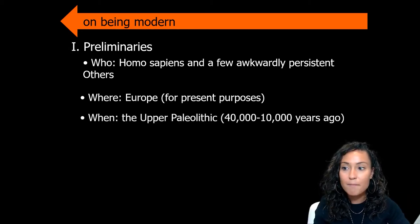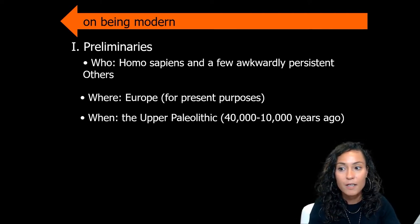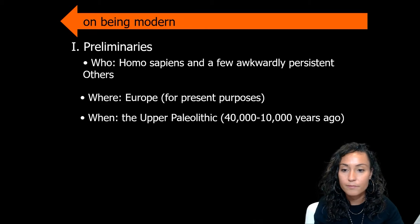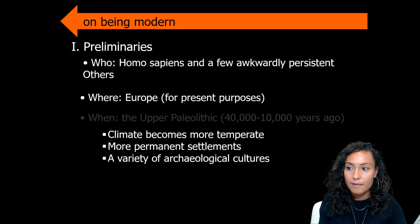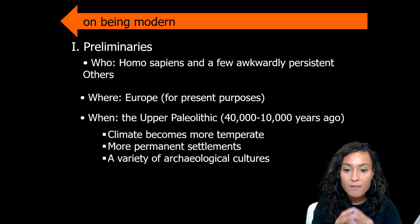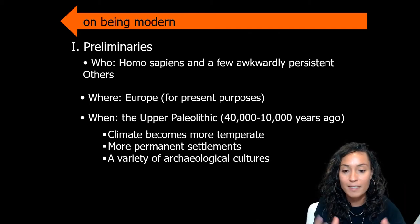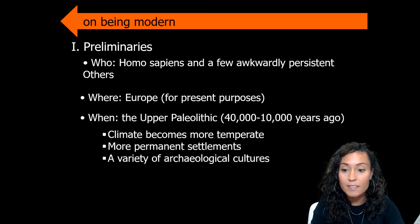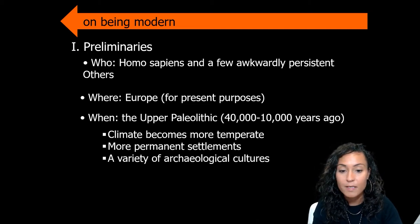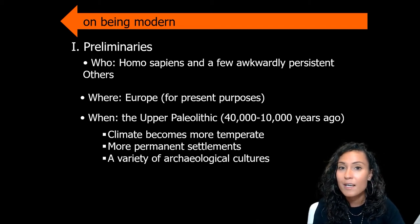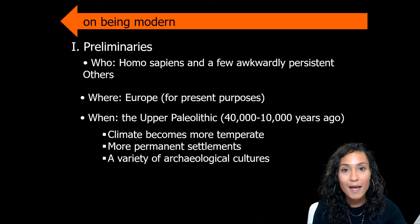In terms of time period, we are going to focus on what's called the Upper Paleolithic, defined as the period between 40,000 and 10,000 years ago. During this time, we see climate becoming more temperate, humans starting to live in more permanent settlements, and a diversification in the types of stone tools and other material culture being produced by our hominin ancestors.